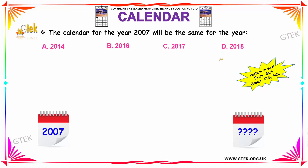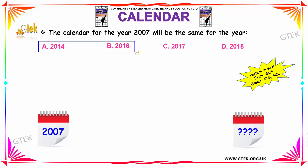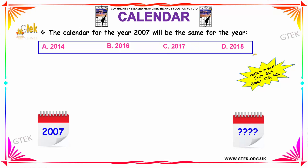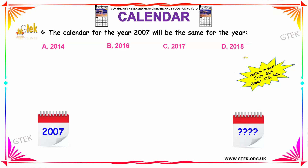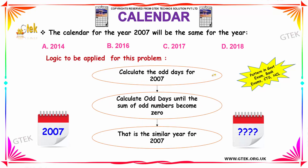Let us move on to our next interesting question. The calendar for the year 2007 will be the same for which of the following years: 2014, 2016, 2017, or 2018? These patterns of questions appear in government, bank, CTS, and HCL exams. Let us see what the logic is to solve this.